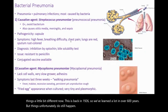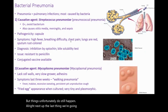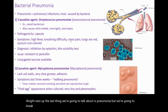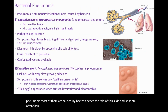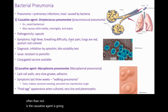Next up, the last thing we're going to talk about is pneumonia, and we're going to break this into bacterial pneumonia and then nosocomial pneumonia. When it comes to pneumonia, most cases are caused by bacteria, and more often than not the causative agent is going to be Streptococcus pneumoniae. We refer to this as pneumococcal pneumonia.